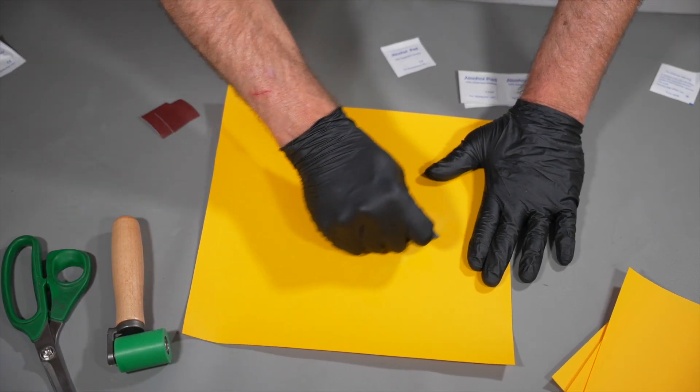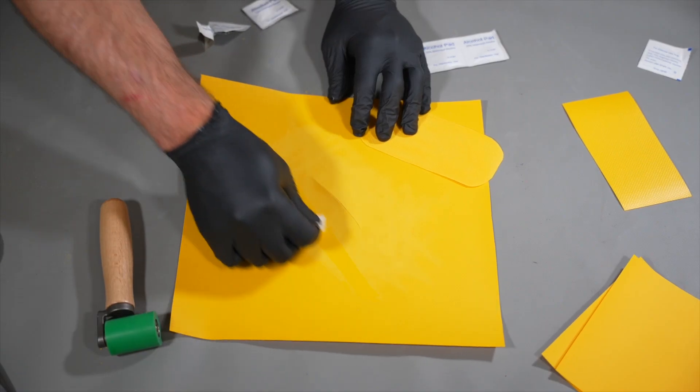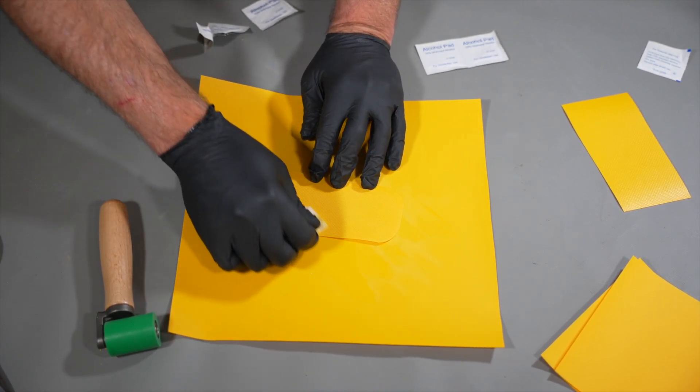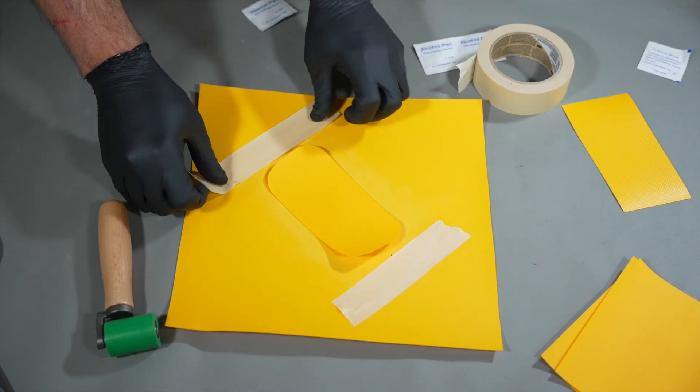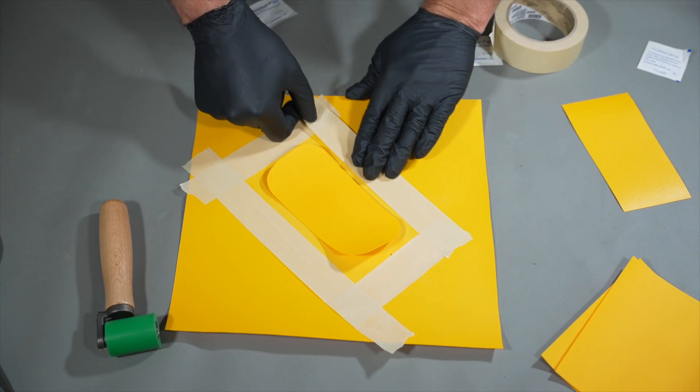Scuff the masked area and one side of the patch with sandpaper. After sanding, clean both the masked area and patch one more time with another alcohol pad. Once your patch has been prepped, mask off the surface of the diversion tube around the hole. Make sure the masked area is slightly larger than the patch itself.